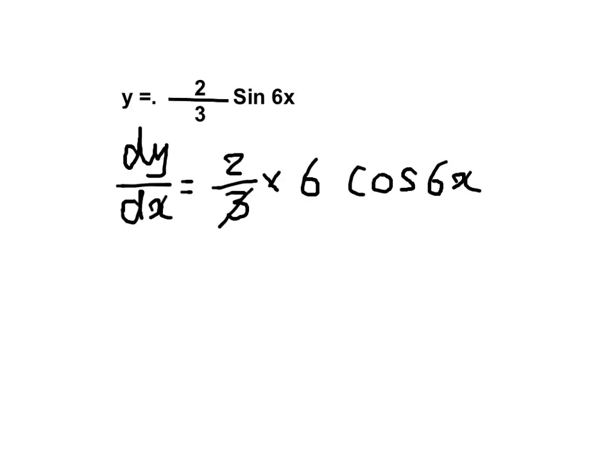And I know 3 and 6 cancel. So that's 2. My final answer is I'm going to do 2 times 2 is 4 cos 6x. And that's my final answer. Thank you very much.